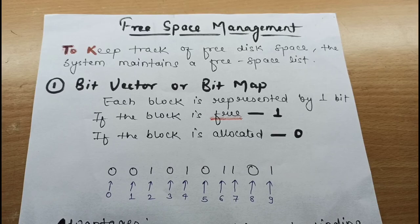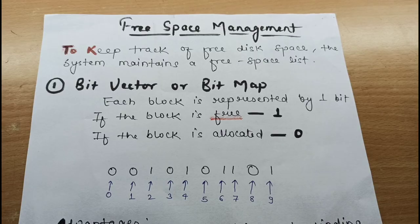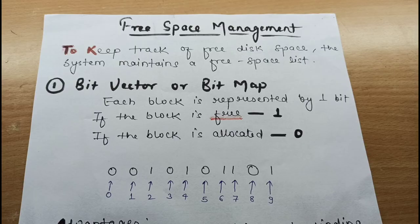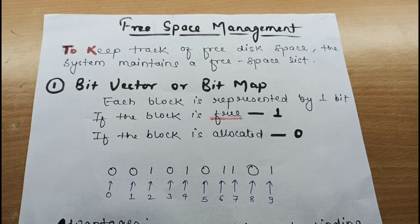After file allocation methods, our next topic is free space management. When discussing file allocation methods, we need to get free blocks to allocate to a requested file. Our disk space is limited, so we need to reuse the space from deleted files for new files. Since disks support multiple reads and writes, the system maintains a free space list to keep track of free disk space.